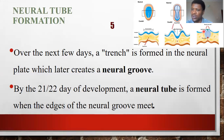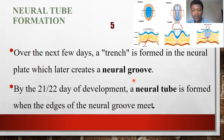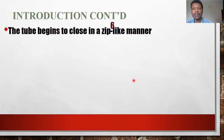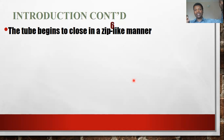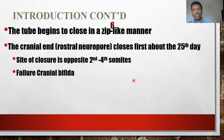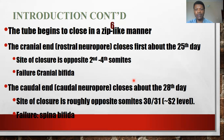Looking at a more detailed diagram, the notochord induces groove formation, which then forms a tube — that's still the same ectodermal layer. This begins to occur from the 16th to 18th day of intrauterine life, and the tube begins to form from the 21st and 22nd day. The tube closes in a zip-like manner, such that the upper part closes faster than the lower parts — the upper part closes around day 25, while the lower part closes around day 27–28.